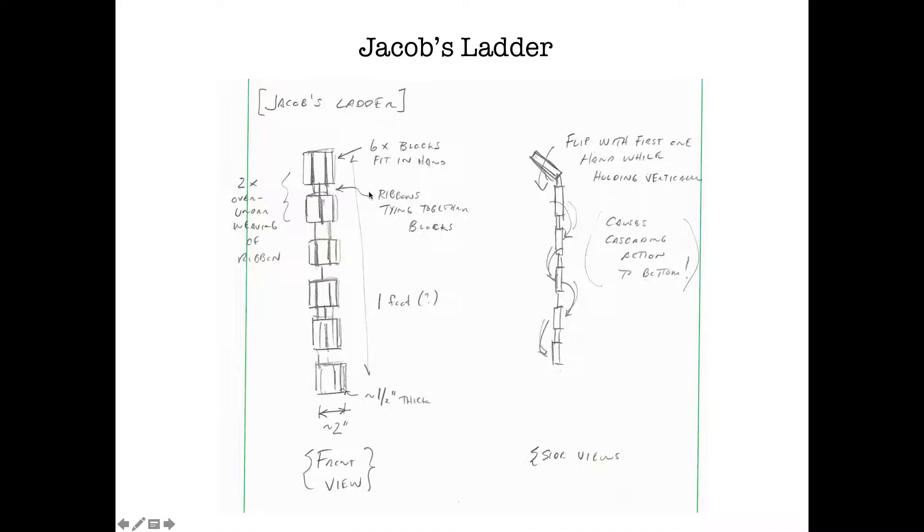All right. So did pretty good there on the different features. Now let's talk about the function and that's where I'm going to the side view. So I have a flip the first one while holding it vertical. So this is conveying that I'm flipping that first block and I'm going back and forth as it causes cascading action all the way to the bottom. So that's fairly clear as well. So again, we're looking for scale and shape. We're also looking for features and we're looking for function.